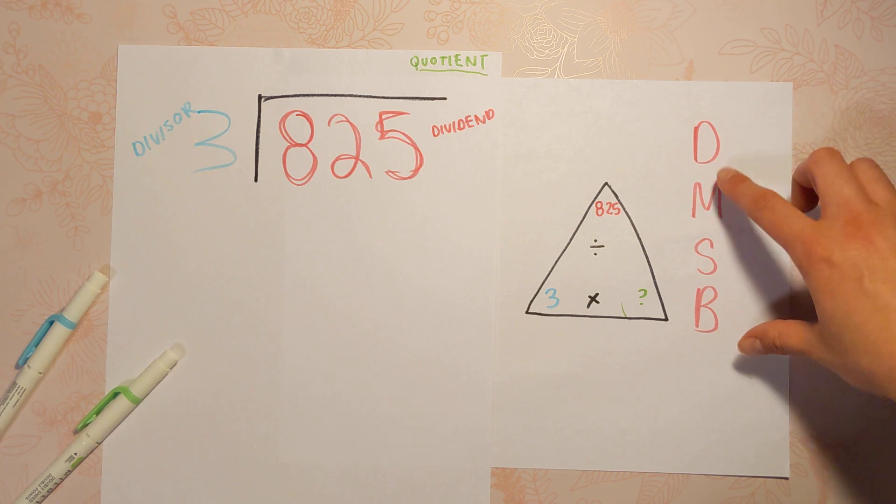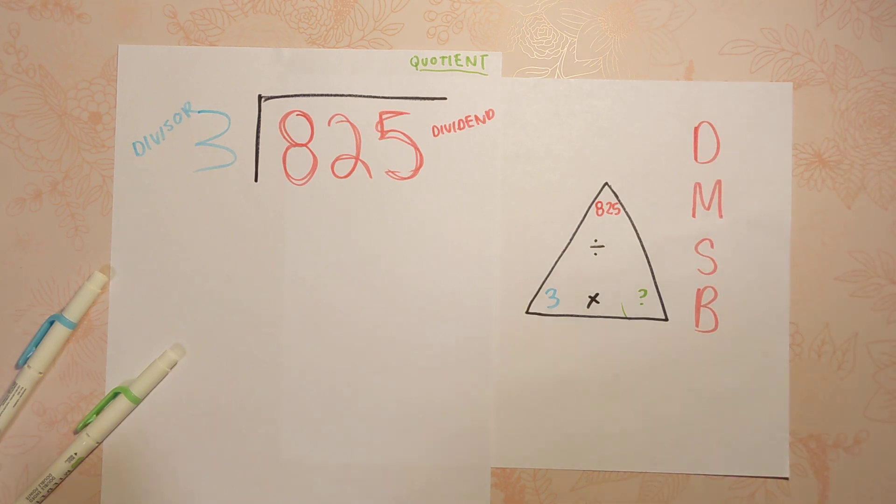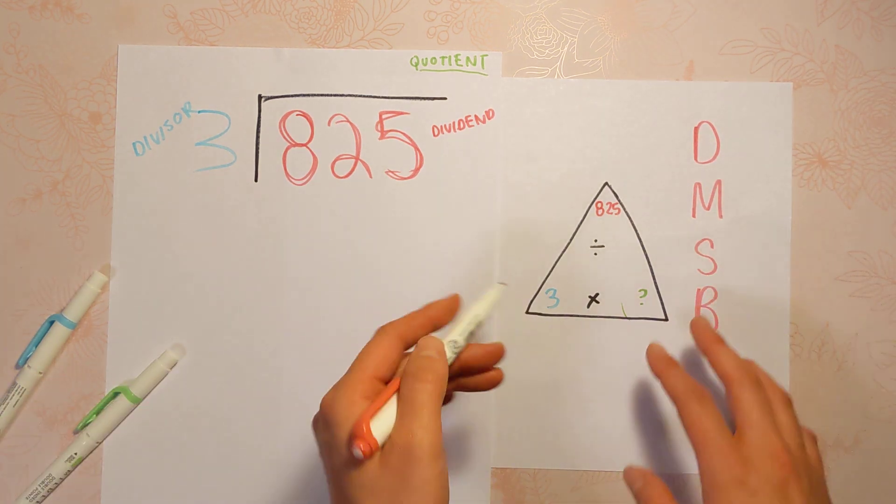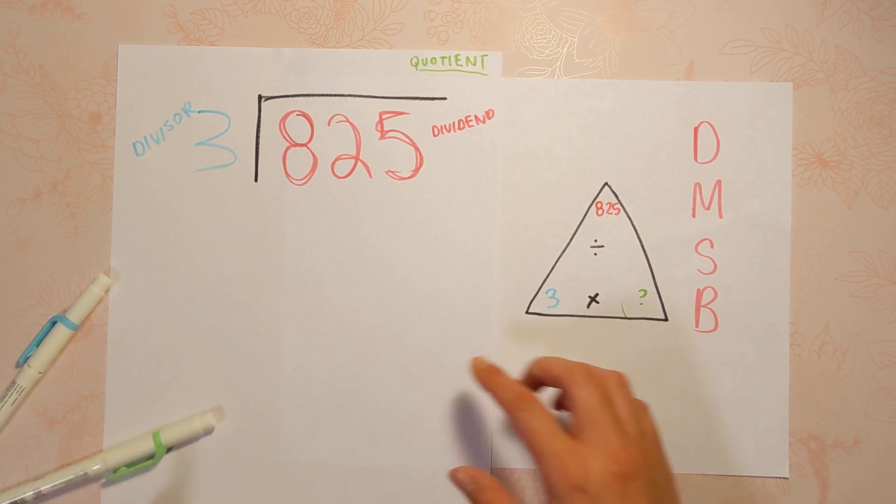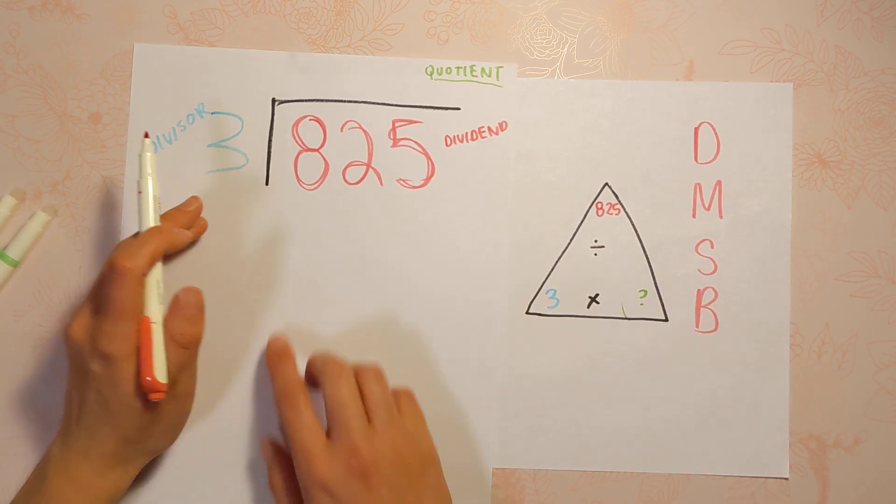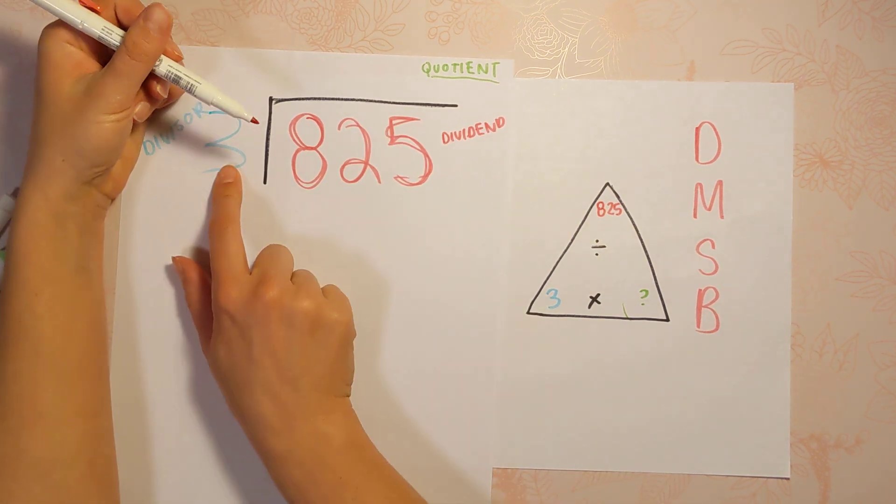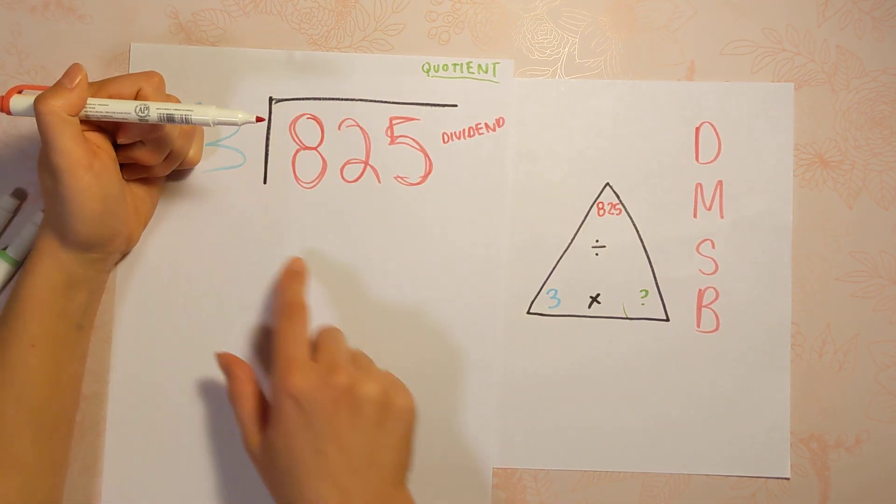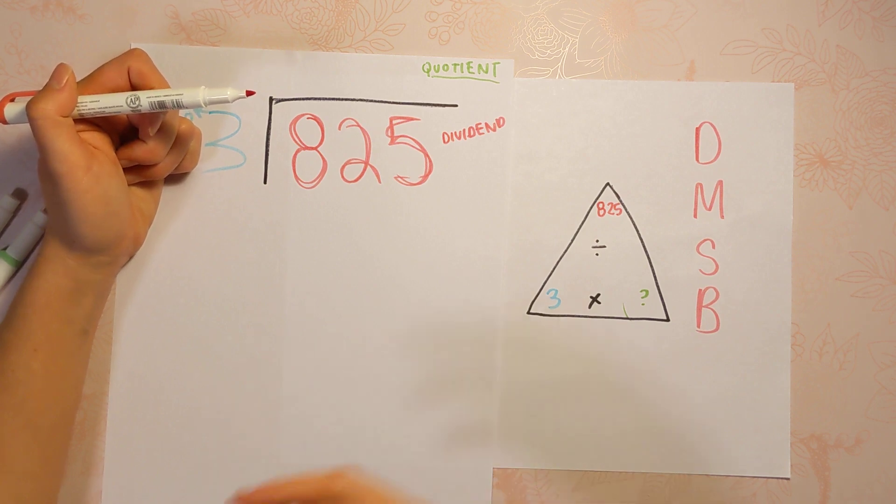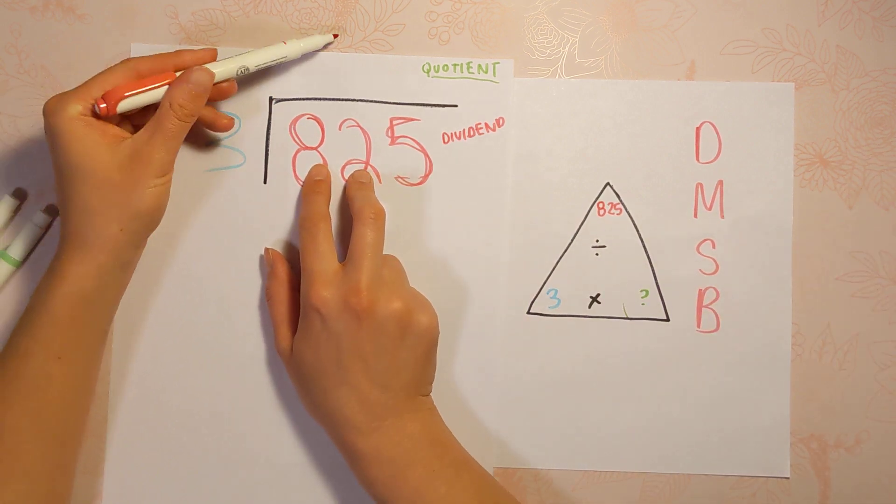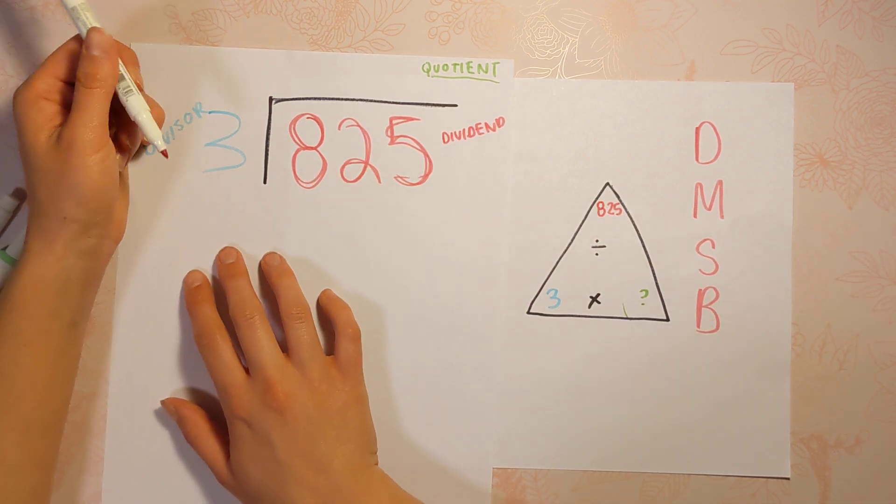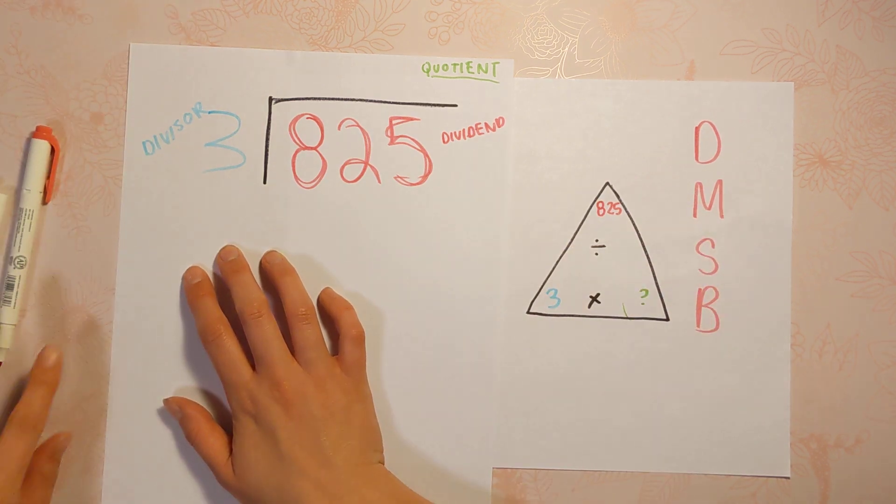All right. So we're going to do divide, multiply, subtract, bring down. And since division and multiplication are related, we will be doing some multiplication because we're basically trying to multiply this 3 into 825, and multiply it how many times. If you wanted to skip count your 3s, 3, 6, 9, 12, until you got to 825, that would work too, but it would take a really long time. So that's why we have these steps.